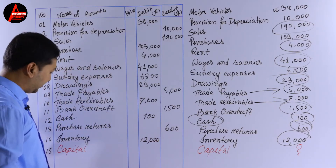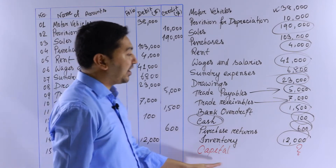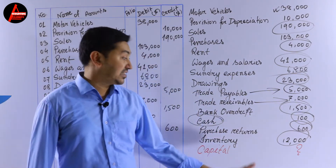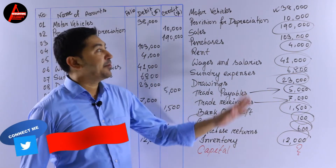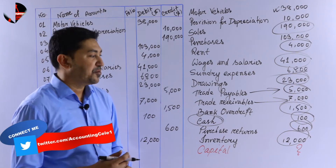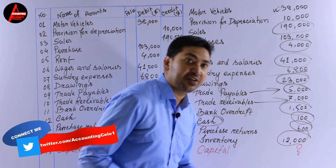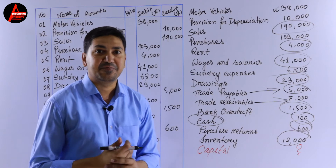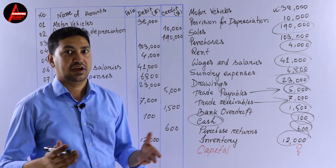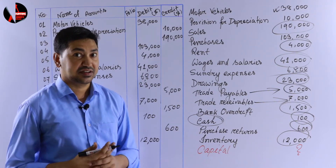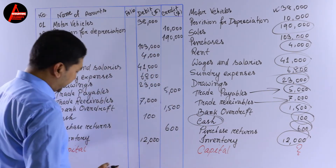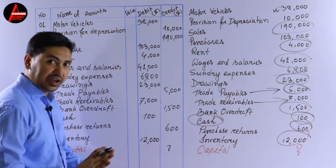The last item is capital, which is a question mark in the question. Many students get confused with this type of question in the exam — they know where to put all expenses, assets, and incomes, but when capital appears without a value, they think it's very complicated. Actually it is very easy. Leave capital for now, put a question mark, and calculate it later.